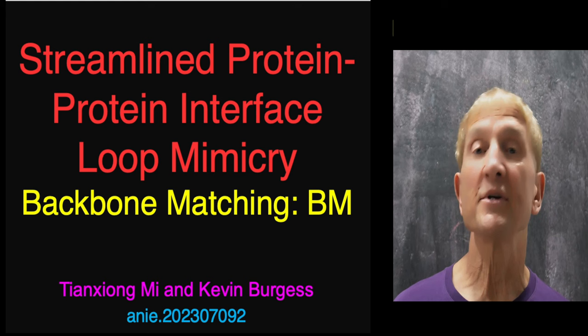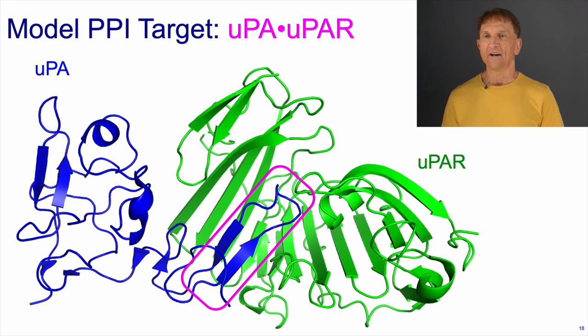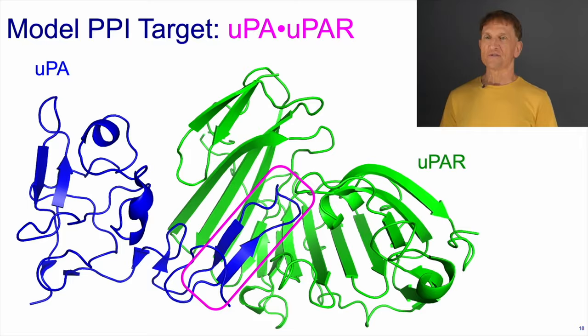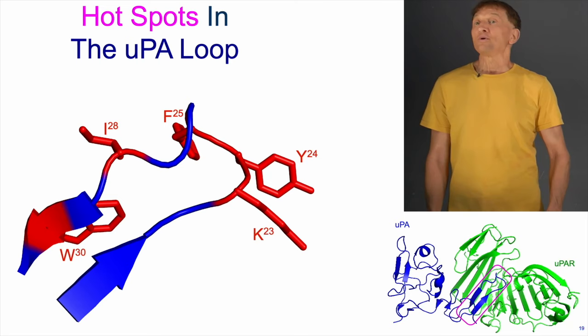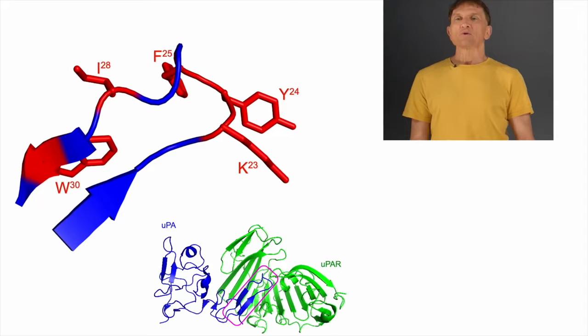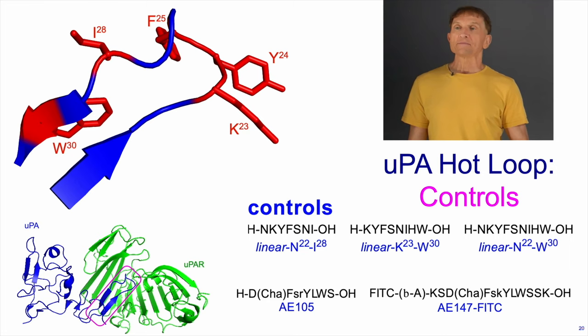UPA binding UPAR is biologically quite an interesting protein-protein interaction, but for us it's an excellent model because the interface is almost solely that loop shown in the pink box. It's essential to be aware of what the hot spots are in that loop — these are the residues we really want to include in any cycloorganopeptide that we find. We need something to compare with — we need positive controls.